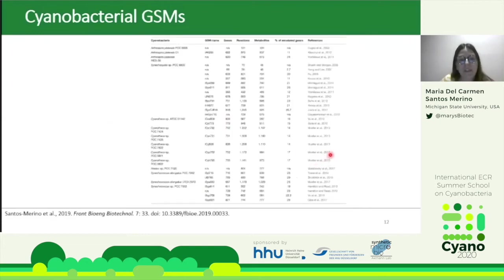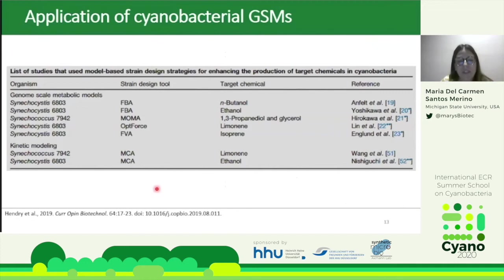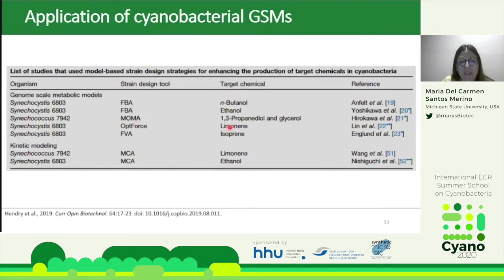This list shows all cyanobacterial genome-scale models developed over many years. Synechocystis has the most, including increasingly larger numbers of reactions, genes, and metabolites. Synechococcus 7002 is second. These genome-scale models can be used in silico to determine modifications for producing specific compounds; models of Synechocystis and Synechococcus have been applied using different algorithms to increase production of various chemical compounds.